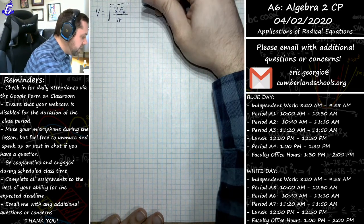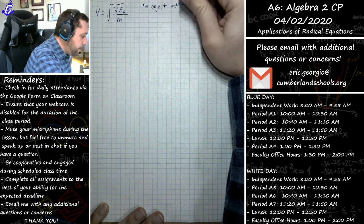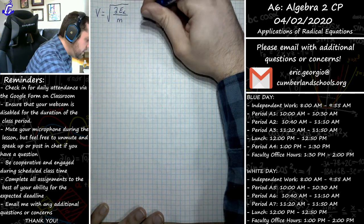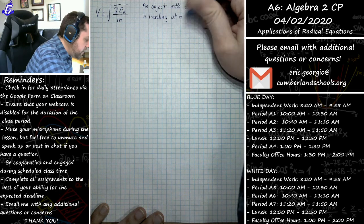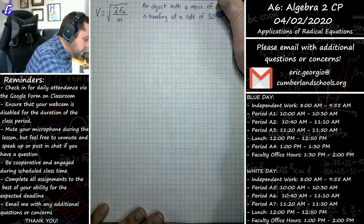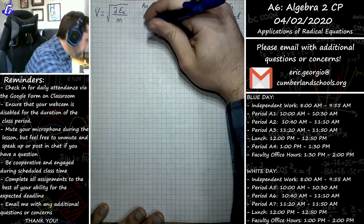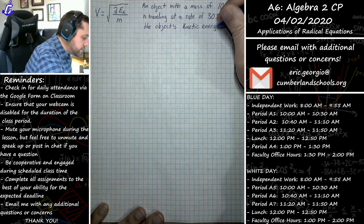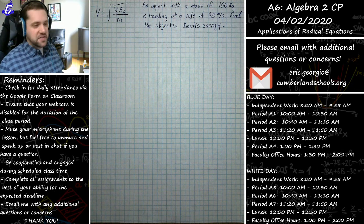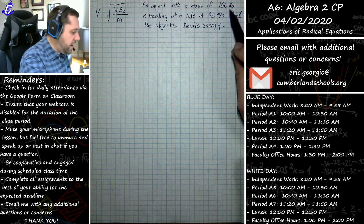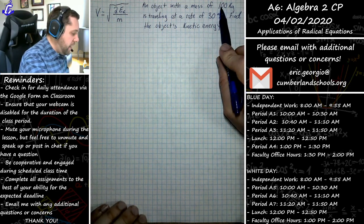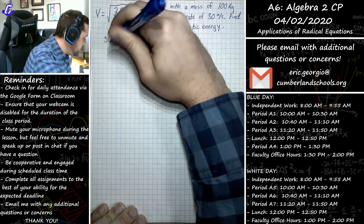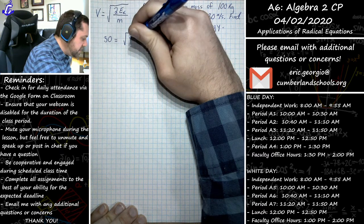Consider this problem: an object with a mass of 100 kilograms is traveling at 30 meters per second — find the object's kinetic energy. I plug in what I know: 30 equals the square root of (2 times Eₖ over 100). The algebraic process is all that matters here, not the physics background.